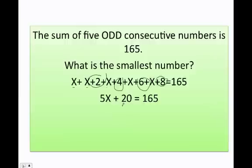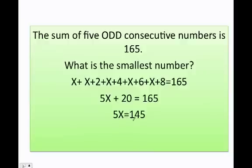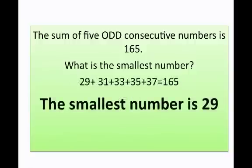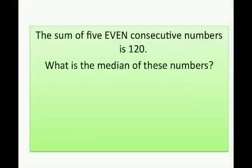Solving for x: the 20 goes to the other side, giving 5x equals 145. Dividing both sides by 5, x equals 29. The smallest number is 29. Checking: 29 plus 31 plus 33 plus 35 plus 37 equals 165. Let's do another one.